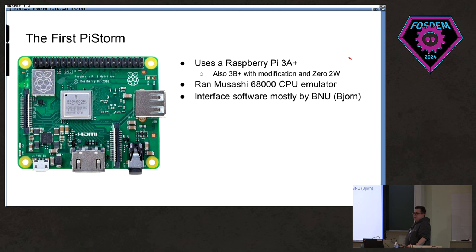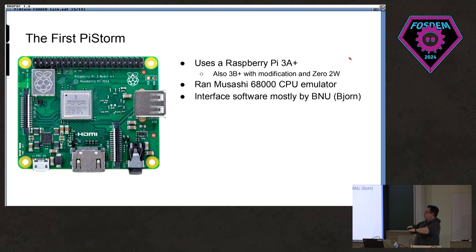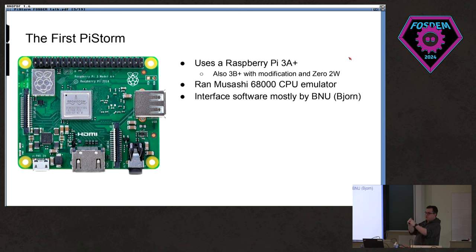We used the Raspberry Pi 3A originally. You could also use the Raspberry Pi 3B, but you'd have to raise the header a bit because otherwise the Ethernet port would smash into the board. You can remove the ports on the 3B if you don't want them, or extend the header. Also, a Pi Zero 2W will work — that's basically a Pi 3 in a much more compressed format.